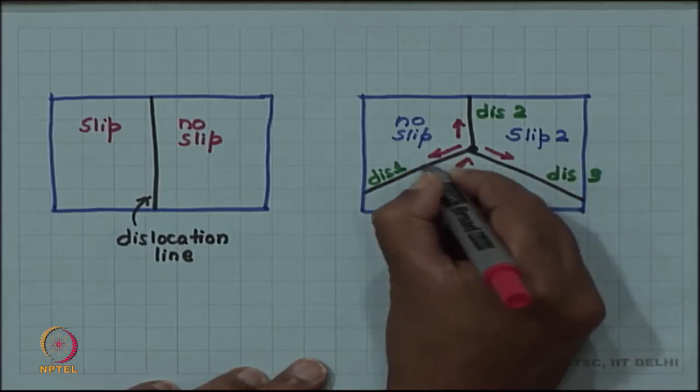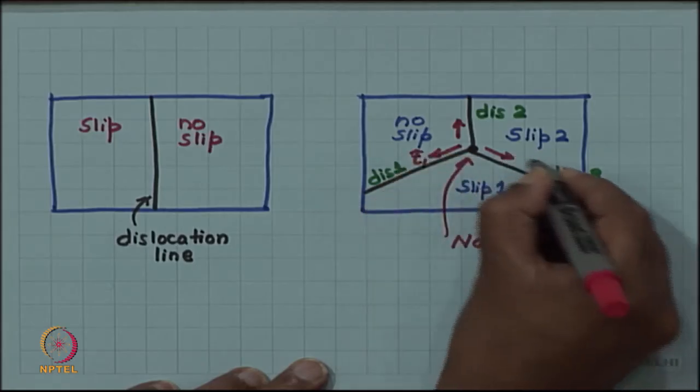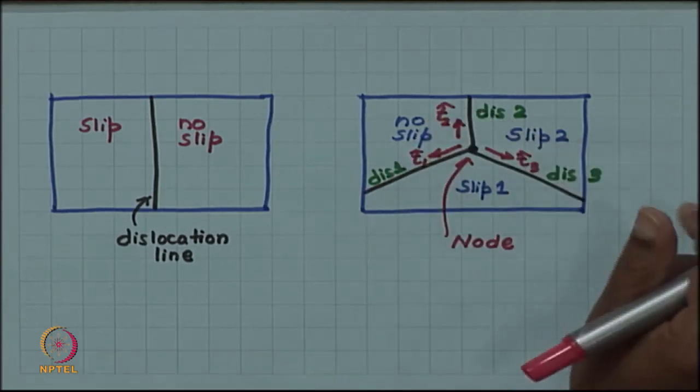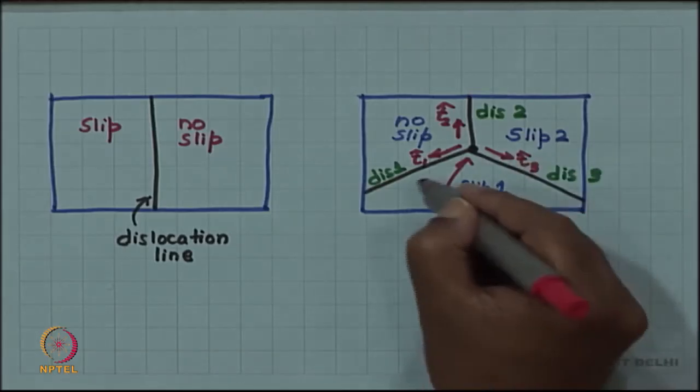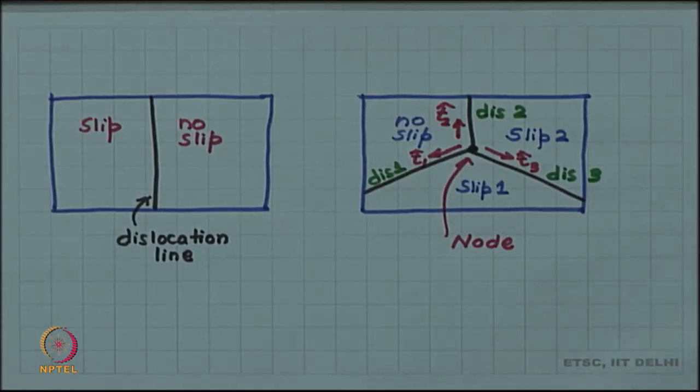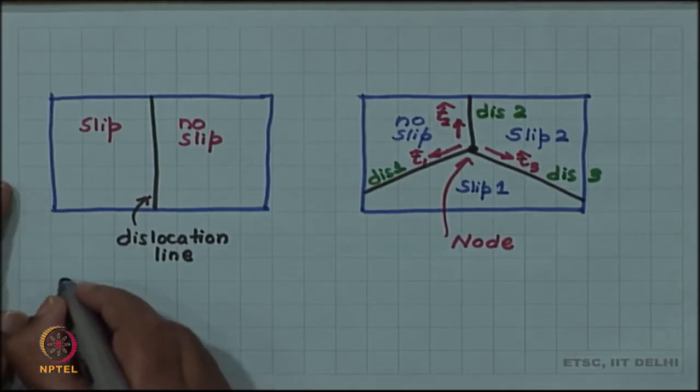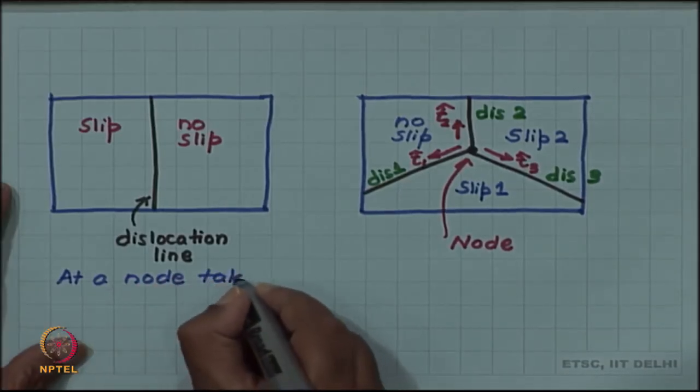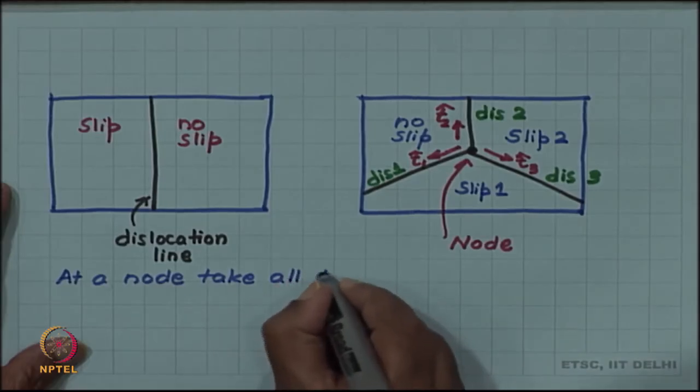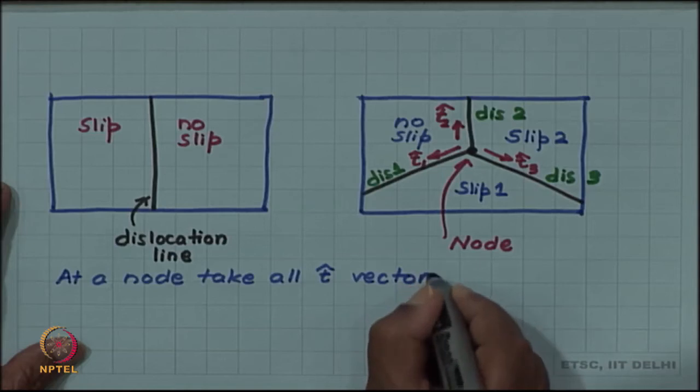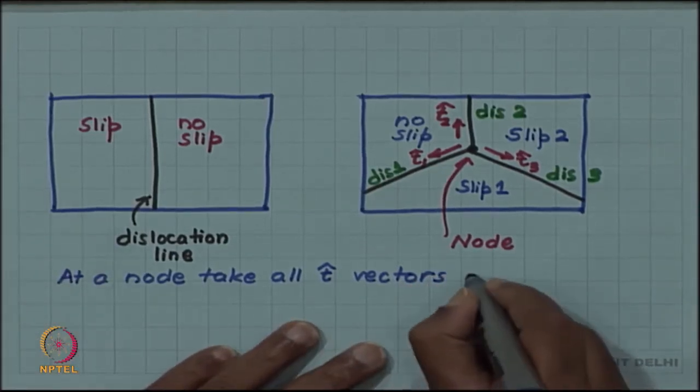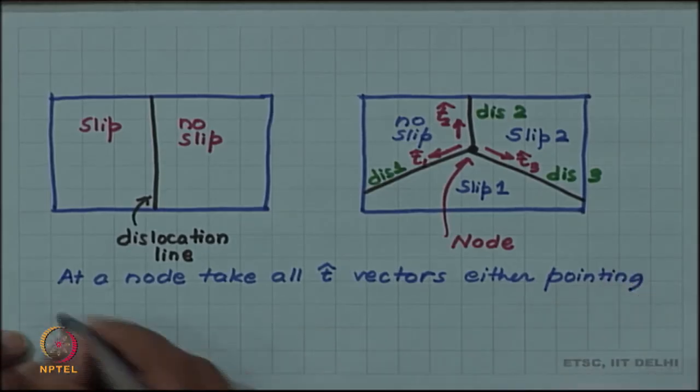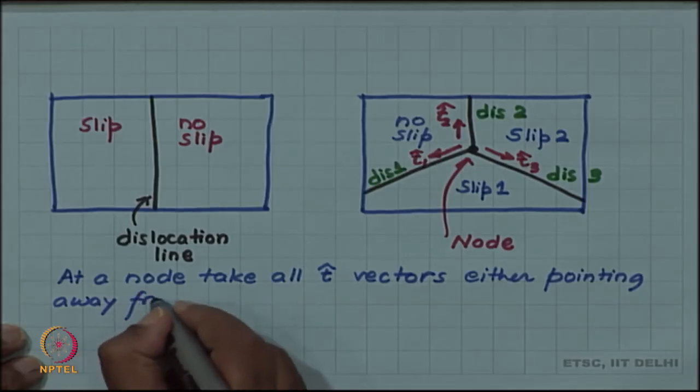The convention for the node is to take all the line vectors going either out of the node or coming into the node. Let me take all the line vectors t1, t3 and t2 coming out of the node. I could have taken all of them inside the node also. In the node the convention is, at a node take all t vectors, the tangent vector or the line vector t vectors, either pointing away from the node.